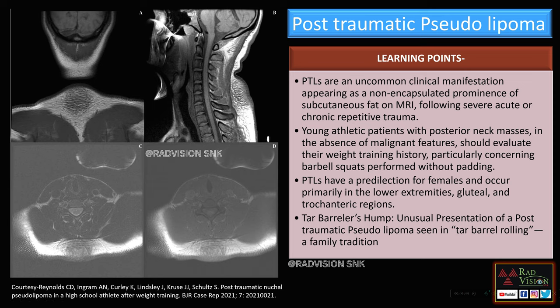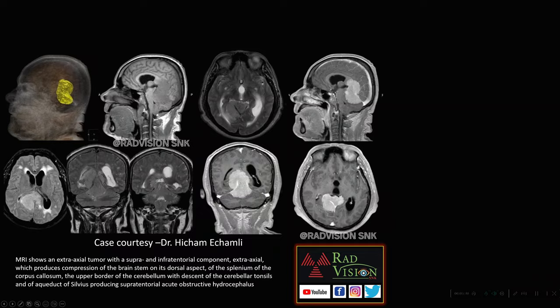Post-traumatic pseudolipoma is not a true lipoma; it is commonly seen in young athletic patients and in persons who regularly perform barbell squats without padding. These lesions have a predilection for females and are primarily seen in the lower extremities, gluteal, or trochanteric regions. Another entity is the tar barrel hump — an unusual presentation seen in tar barrel rolling, a family tradition where burning barrels are carried on the back, particularly on the neck, producing a similar appearance.